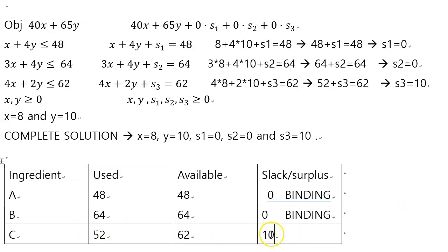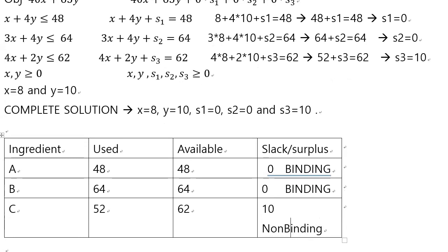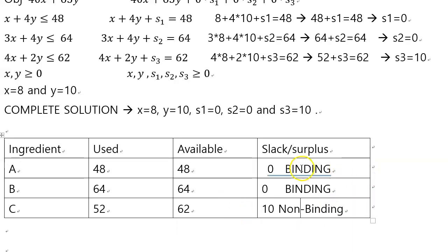And the last one, because this is non-zero, that's called non-binding constraint. So this building tables is important when you try to figure out which of the constraint is binding and which one is non-binding.